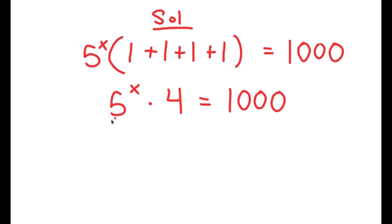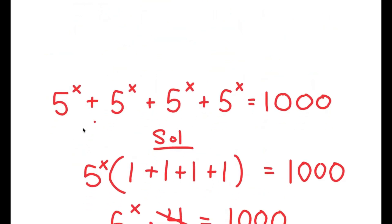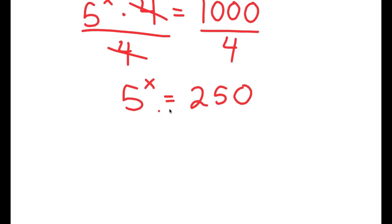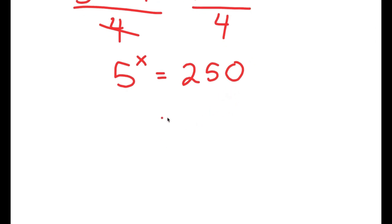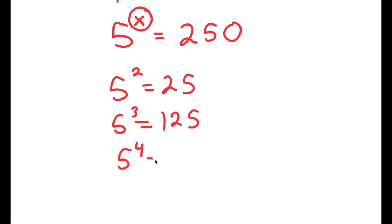Now, 1 plus 1 plus 1 plus 1 is 4, so I get 5 to the power of x times 4 is equal to 1,000. We want to isolate x, so I'm going to divide both sides by 4 — these two cancel out — and I get 5 to the power of x is equal to 1,000 divided by 4, which is 250. Just at first glance, we can tell that x is not going to be a whole number, because 5 squared is 25, 5 to the power of 3 is 125, and 5 to the power of 4 is 625. So the value of x is somewhere in between 3 and 4.